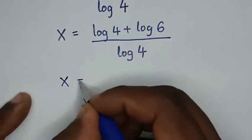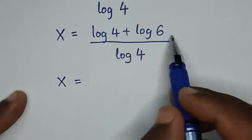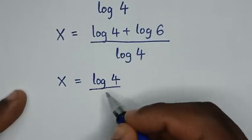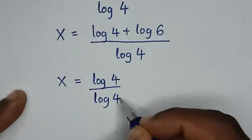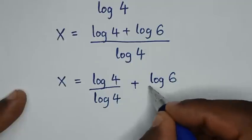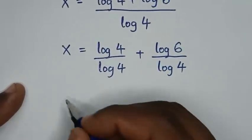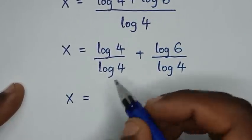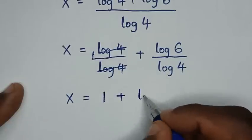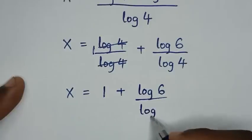Then x is equal to the fraction split: we divide each term by log of 4. So log of 4 over log of 4 is 1, giving us x is equal to 1 plus log of 6 over log of 4.